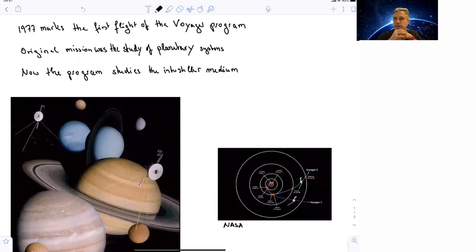1977 marks the first flight of the Voyager program. Voyager is an MIT-led program with the original mission to study planetary systems.